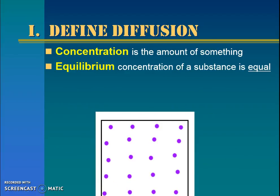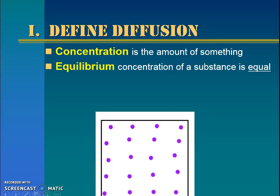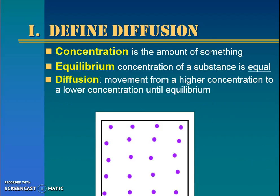Most molecules like to move until they reach an equilibrium — they like to be an equal amount everywhere. Picture spraying perfume in a corner of a room, just like this purple molecule. That perfume over time will move throughout the whole entire room until it's equal everywhere, from a high concentration to spread around everywhere. We call that movement that happens all by itself, doesn't require any energy — we call that diffusion.